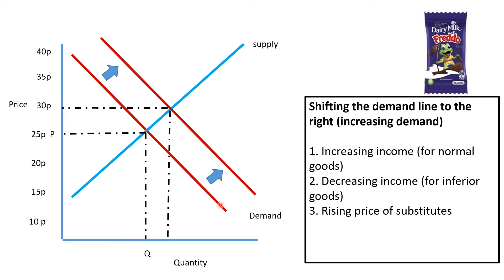The third reason is the rising price of substitutes. A substitute product is not the same product, but something that satisfies the same need. For instance, if the price of going bowling goes up, a substitute for bowling might be going to the cinema — it's a bit of light entertainment. So if the price of bowling goes up, it will increase the demand for cinema. Think about what your substitute products are. If I was doing cars, a substitute might be public transport — if the cost of public transport goes up, the demand for cars might increase.